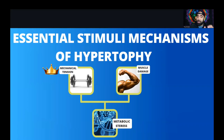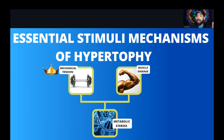Number two is metabolic stress. Think of metabolic stress as potentially high reps — trying to get a pump, so to speak. You'd classify it as lactate, high-rep training, and also an accumulation of metabolites including lactate, hydrogen ions, calcium, MAP kinase, and mTOR. There are hundreds of them — basically it's just accumulation.